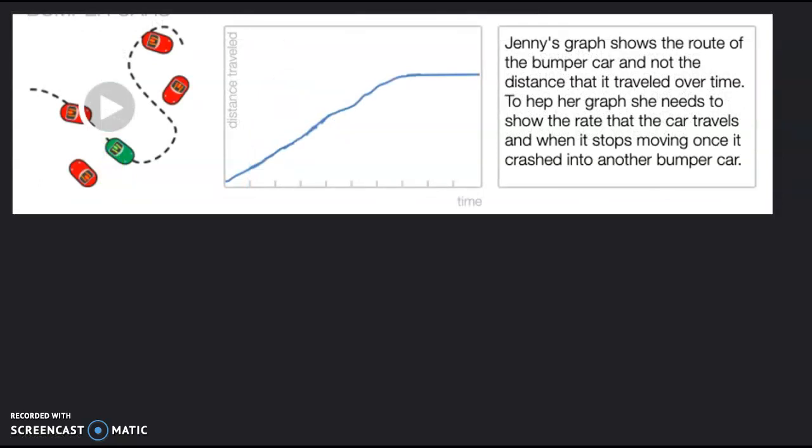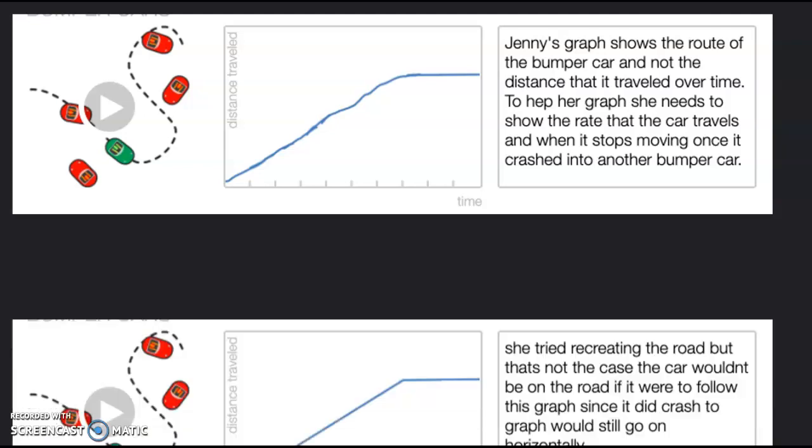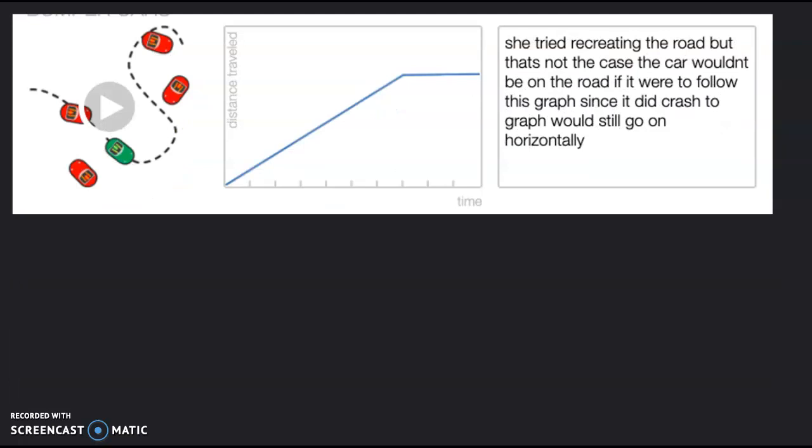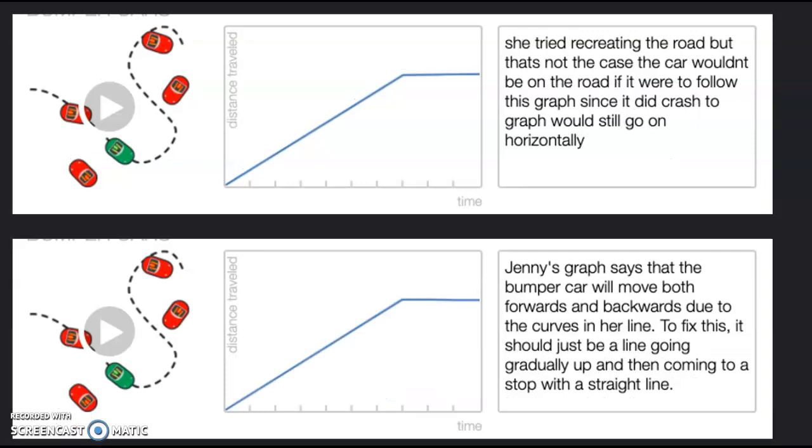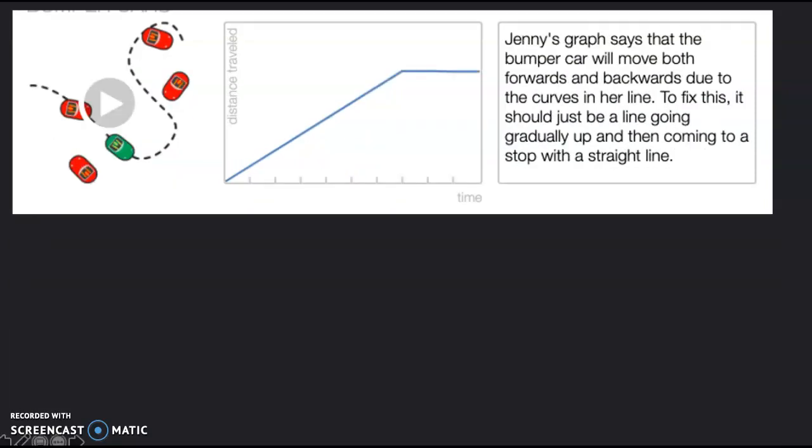For the bumper cars, there's one response. You can pause, read it over if you'd like. Another response that was using the line tool, so a little more accurate. And then another response that was pretty much the same in terms of the graph, and then just a different explanation.